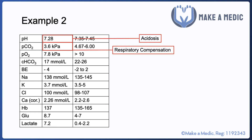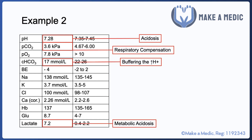Looking at one more example: the same pH suggests the patient is acidotic. The pCO2 is low, meaning their breathing has increased to blow off carbon dioxide and make the blood less acidic. The bicarbonate has decreased, suggesting some of it has combined with protons to form carbonic acid, performing its function as a buffer.